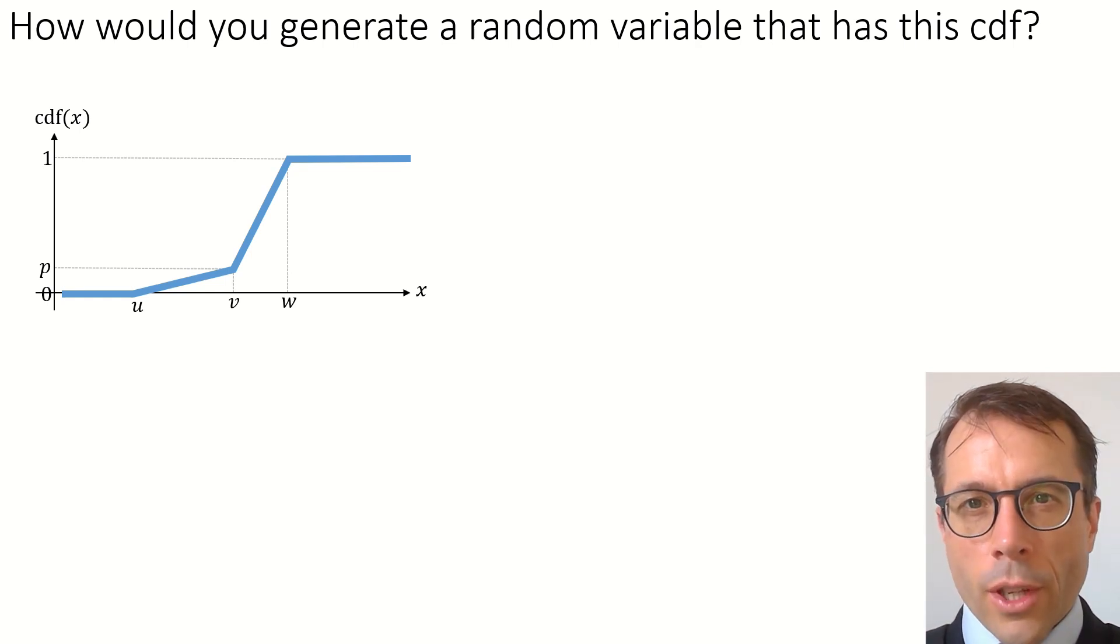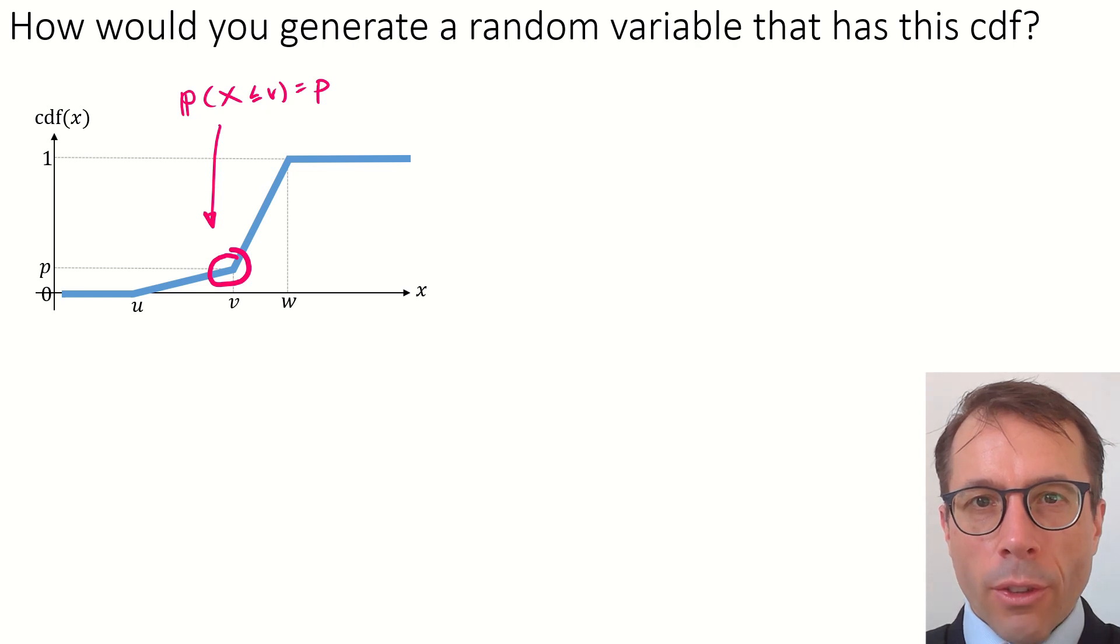The way I'd reason about it is this. Let's first look at the inflection point in the graph, the point at v, p. When we translate this point into what a CDF is, it's telling us we want the probability that our random variable is less than or equal to v. We want that probability to be equal to p.